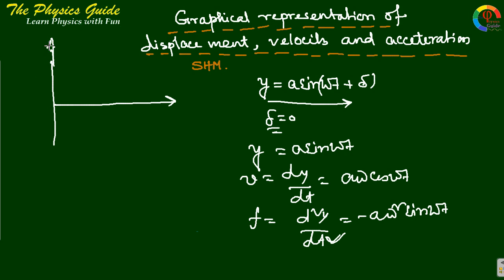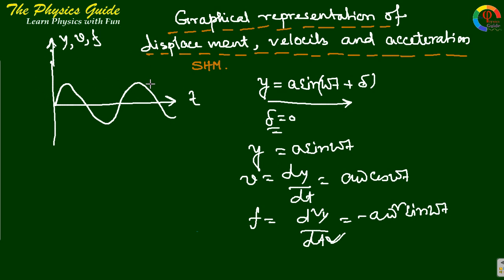So we can plot the displacement, velocity, and acceleration with time. For y equals A sine(ωt), y has a maximum value of A. At t equals zero, y equals zero, so it starts at zero and goes like a sine curve. This is the graph for displacement y with respect to time t.